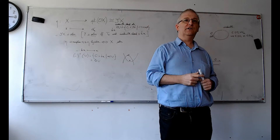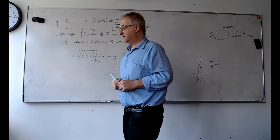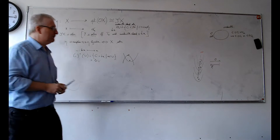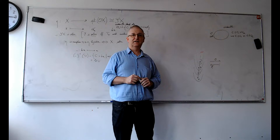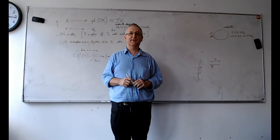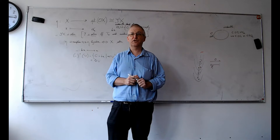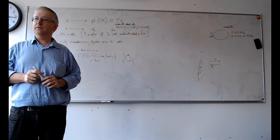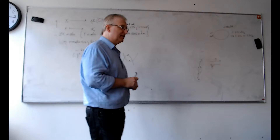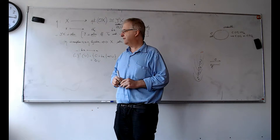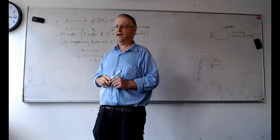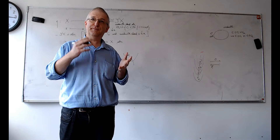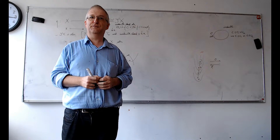There are two things to do: first, we have an example of a non-sober space, but what kinds of spaces are sober? There are important classes of spaces that are automatically sober. Second, there is an adjunction behind this construction, so I would like to explain adjunctions. Let me start with the first part.